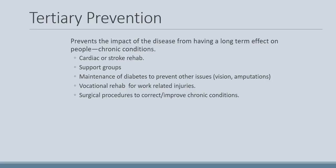The last level of prevention is tertiary prevention, designed to prevent the long-term impact of disease on people with chronic conditions. Examples include stroke or cardiac rehab to regain use of parts of the body, support groups for people with chronic diseases, maintenance of diabetes to prevent complications like vision loss or amputation, vocational rehab for work-related injuries, and surgical procedures to correct chronic conditions — such as surgery to widen arteries in someone with atherosclerosis.